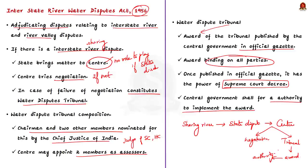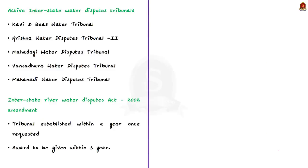Earlier we saw various water disputes. For all these disputes, tribunals have been set up. But currently in India, only five interstate water dispute tribunals are active: Ravi and Beas Water Tribunal, Krishna Water Disputes Tribunal, Mahadai Water Disputes Tribunal, Vamsadhara Water Disputes Tribunal, and Mahanadi Water Disputes Tribunal.